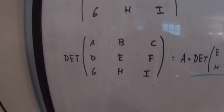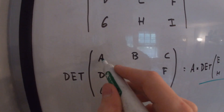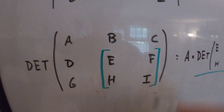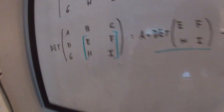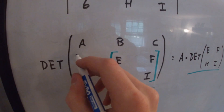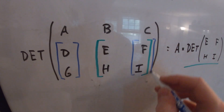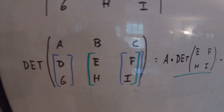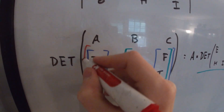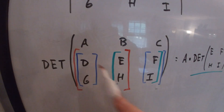If we wanted to take the determinant of this matrix, there's a pattern we have to memorize. We multiply A times the determinant of a sub-matrix, then subtract B times the determinant of another sub-matrix, then add C times the determinant of the remaining sub-matrix with elements D, E, G, I.